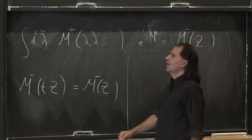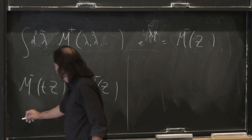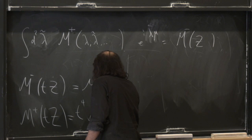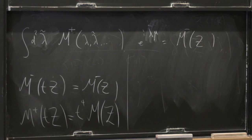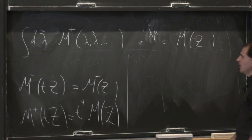What if I take a positive helicity amplitude? Now this thing is going to pick up a weight — lambda-tilde has a weight of four. So m-plus of tz is going to pick up a weight t to the fourth times m of z. So you see something slightly interesting here: in twistor space, the null rays don't depend on the overall scale. The actual amplitudes carry a little bit of information about the overall scaling of these vectors, and that's exactly what encodes the helicity.